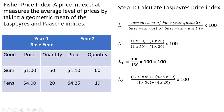In year two, the current cost of the base year quantity is going to be $1.10 times 50 plus $4.25 times 20. That is the current cost of the base year quantity. And the base year cost of the base year quantity is the same as we did for year one: $1 times 50 plus $4 times 20.